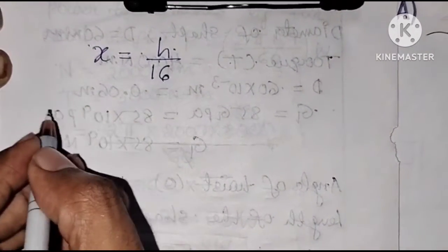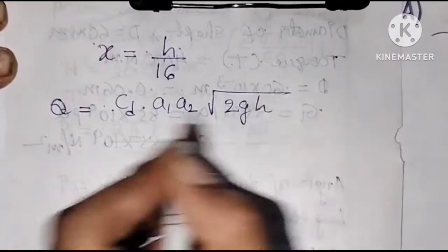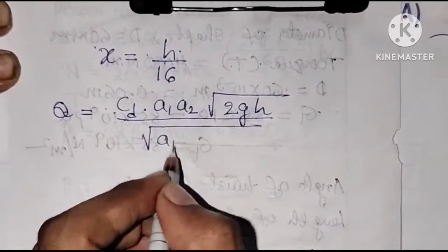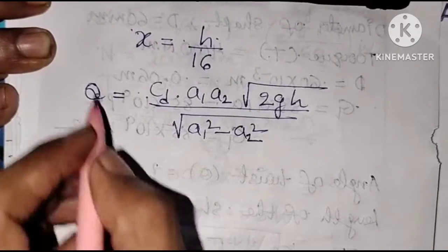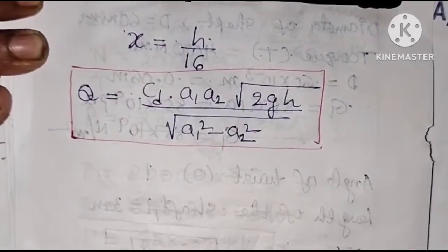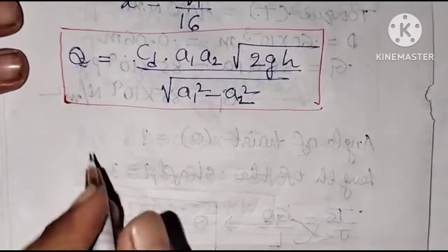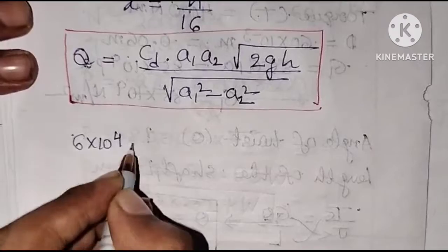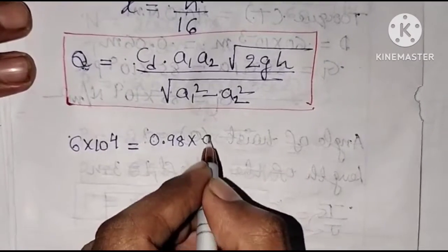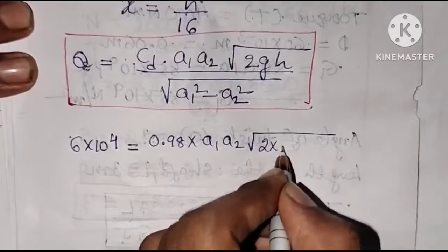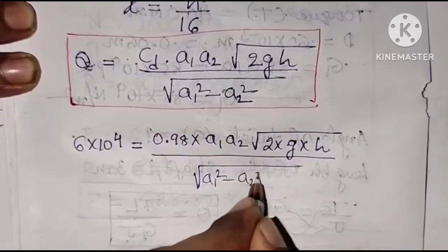Discharge through the venturimeter Q is equal to Cd into a1·a2·√(2gh) whole divided by √(a1² minus a2²). This is the formula for discharge through a venturimeter. Using this formula, we can find h. Let us substitute all values. Q is 6 into 10⁴ cm³/s, and Cd is 0.98.